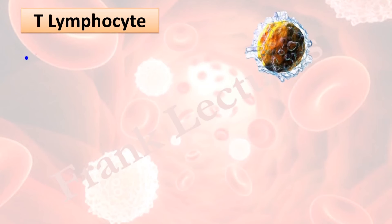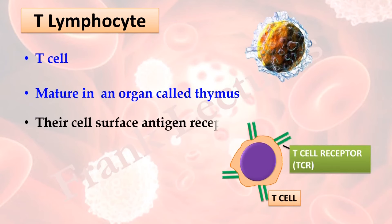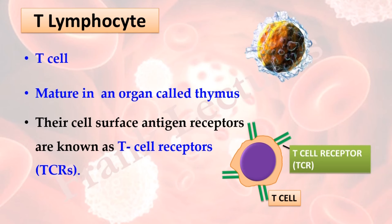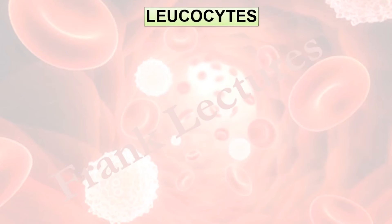T lymphocytes, or T cells, mature in an organ called the thymus. Their cell surface antigen receptors are known as T cell receptors. Further details of T lymphocytes will be studied separately in a separate video lecture.